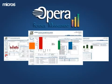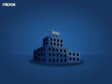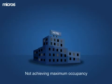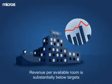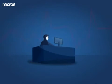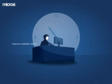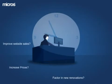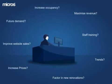First, let's look at the way things used to be. This hotel is having trouble achieving maximum occupancy, and their revenue per available room is substantially below where the general manager would like it to be. To address this problem, the revenue manager analyses the past booking trends of the hotel. He spends hours manipulating the data trying to identify trends to help him predict future demand, and set price recommendations that can both increase occupancy and maximise revenue.